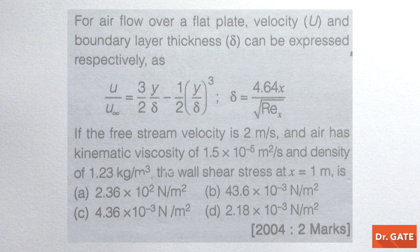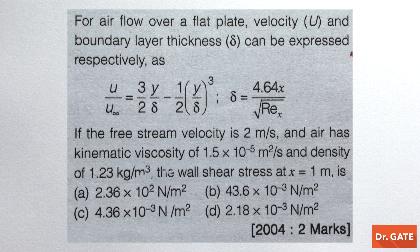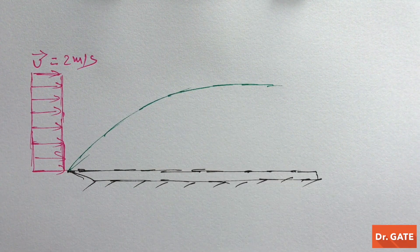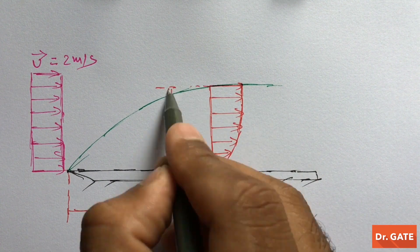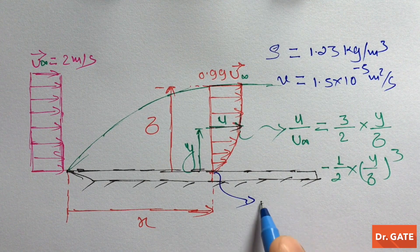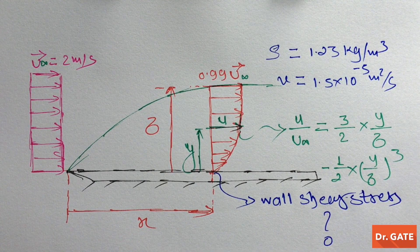First question: for air flow over a flat plate, velocity and boundary layer thickness can be expressed as shown. If the free stream velocity is 2 meters per second and air has a kinematic viscosity of 1.5 × 10⁻⁴ m²/s and density of 1.23 kg/m³, the wall shear stress at x = 1 meter is to be found.